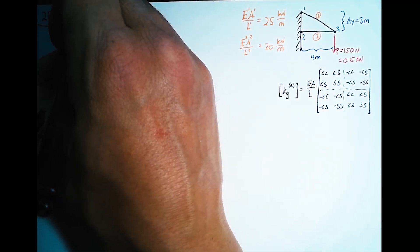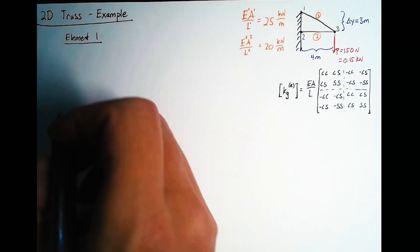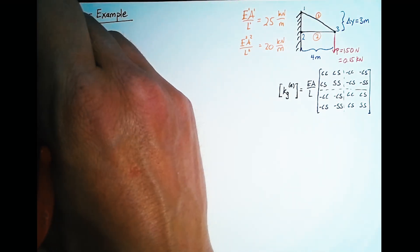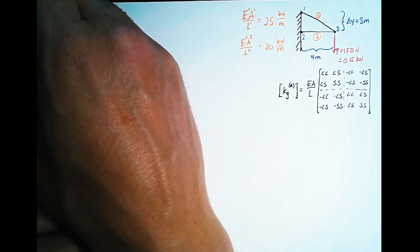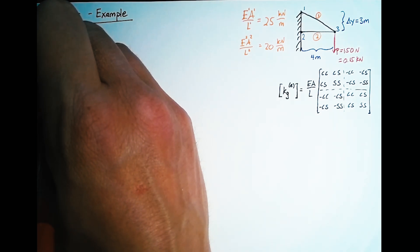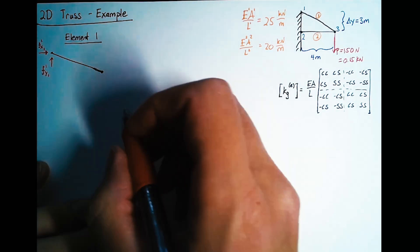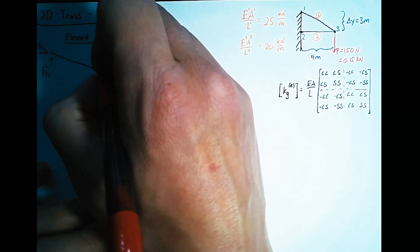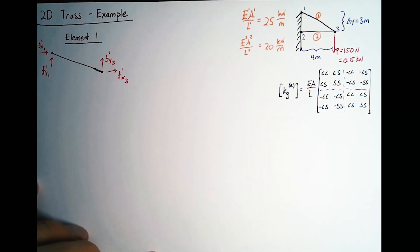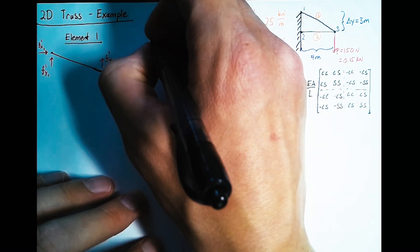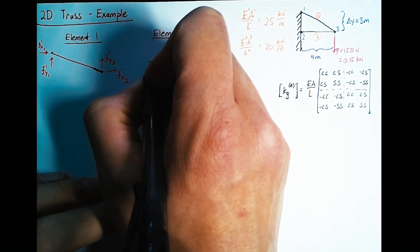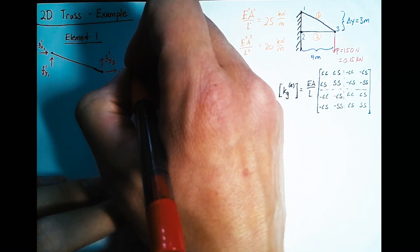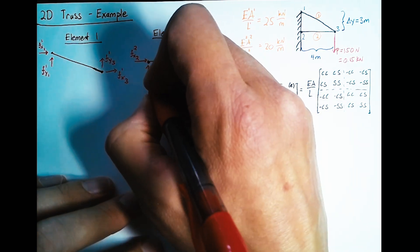Let's look at our two elements in more detail. Element 1 is between nodes 1 and 3. We want to define the forces acting on those nodes in the global reference frame, so these will be in X's and Y's. For element 2, we have a nice clean horizontal element, and the forces here are the force in the X direction on node 2 for element 2, and the same thing for Y.